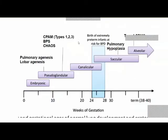Based on these developmental stages, abnormalities at different times produce different congenital anomalies. An abnormality at the pseudoglandular stage can cause pulmonary agenesis or lobar agenesis. Towards the end of that stage: CPAMs types 1–3, bronchopulmonary sequestration, or congenital high airway obstruction syndrome. In the saccular stage, pulmonary hypoplasia can occur, for example from CDH — if fetal intervention is performed during that period, pulmonary hypoplasia can be avoided.